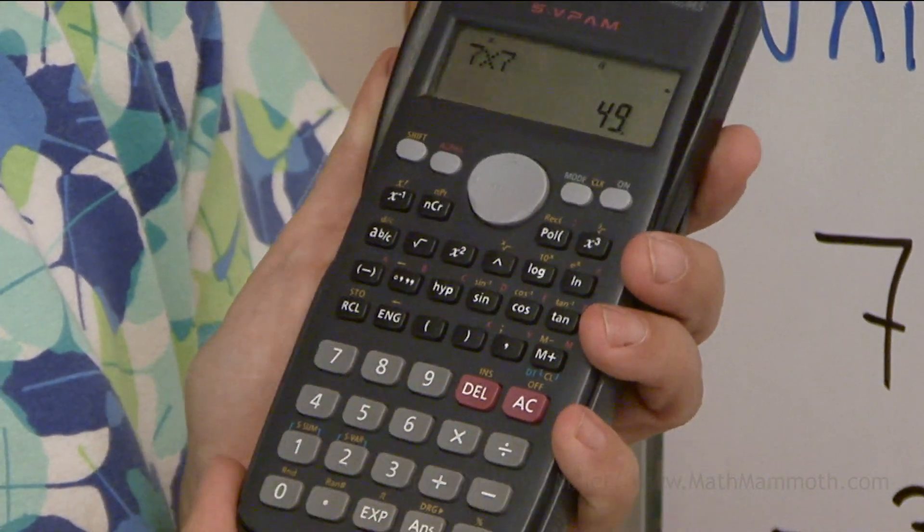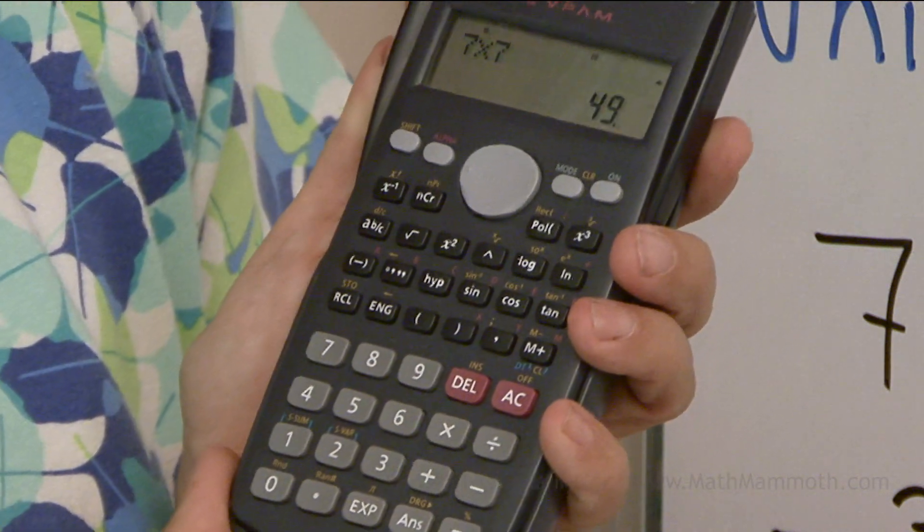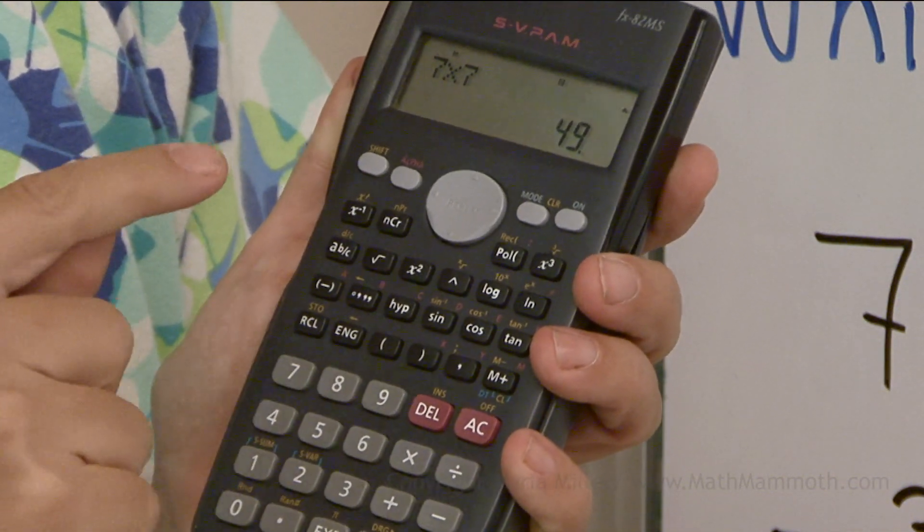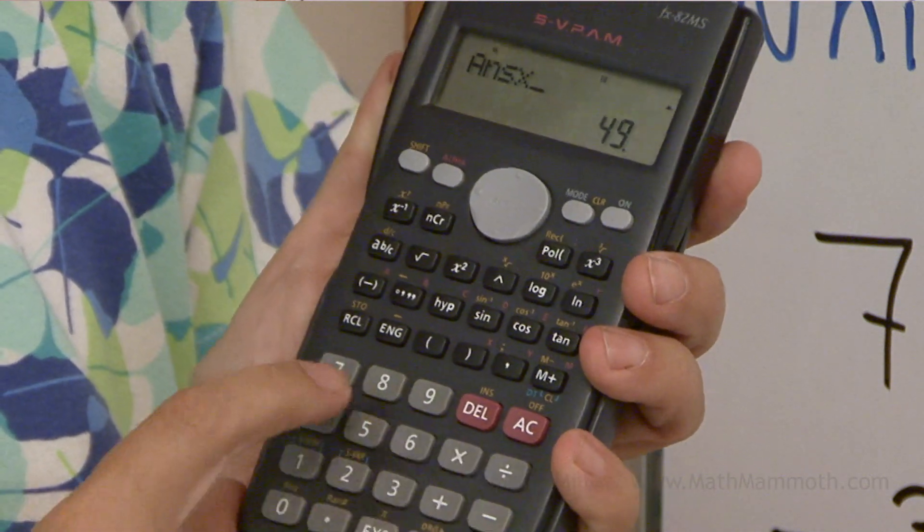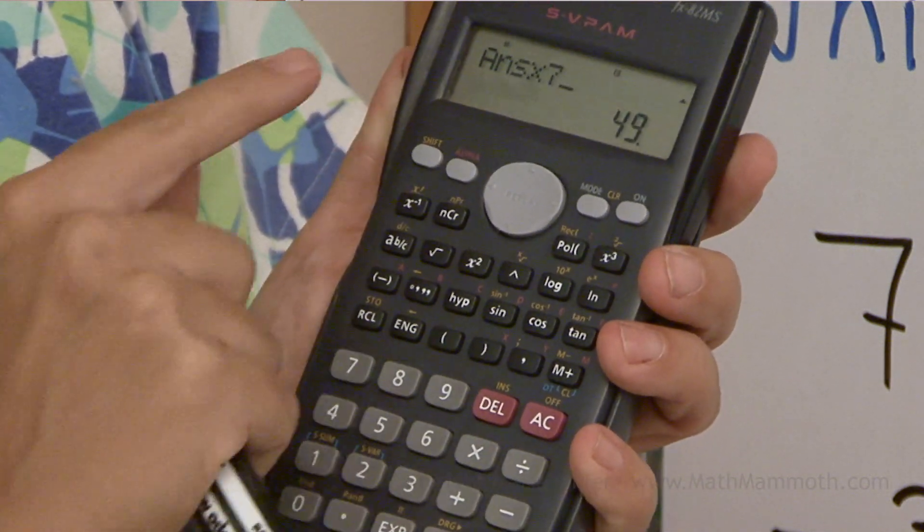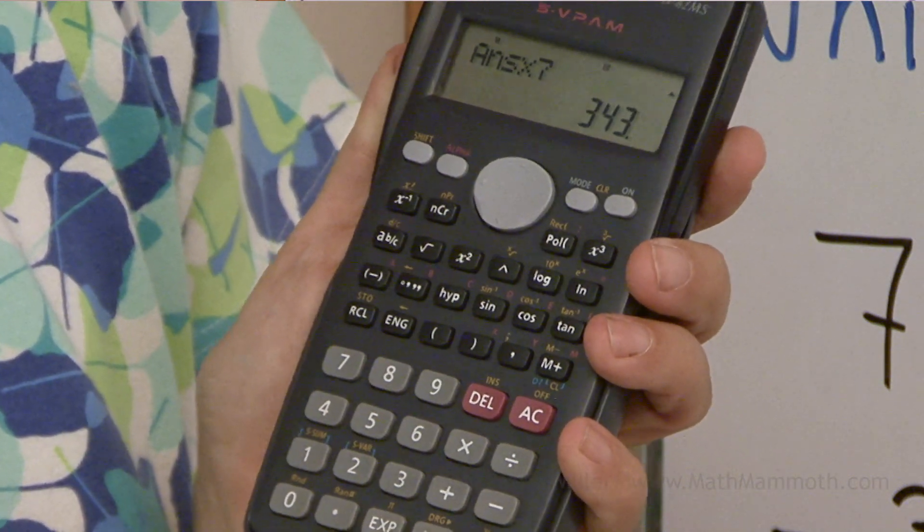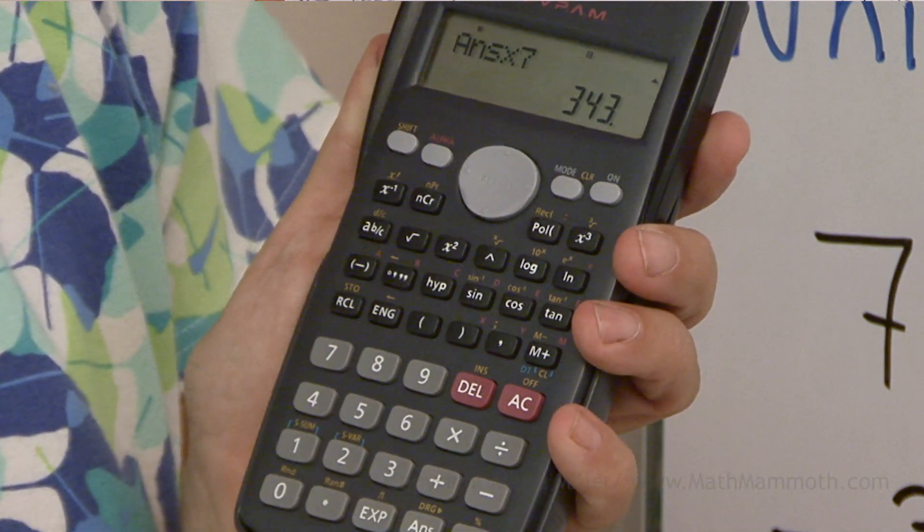Seven times seven equals 49. Now I'm going to take this previous answer and multiply that times seven. So all I do is go times seven. It shows me ans here, ans times seven, and then equals. So this is 343.